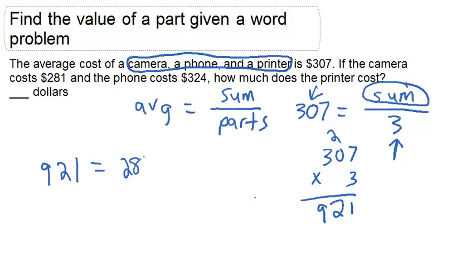So we have $281 for the camera, $324 for the phone, and some unknown value for the printer. That's what we're trying to figure out. If we were to add these two up, $324 and $281, we get $605.